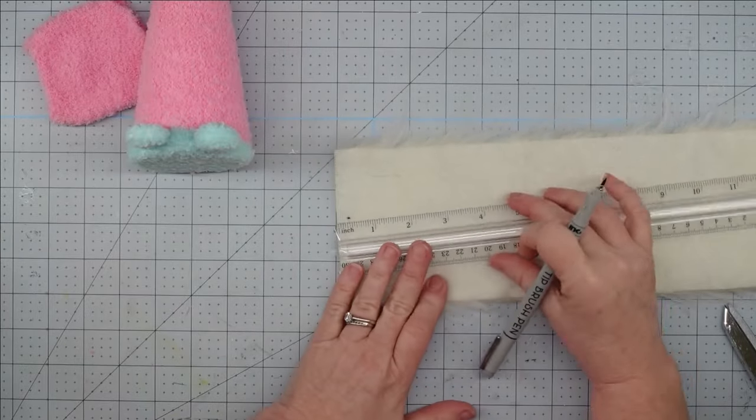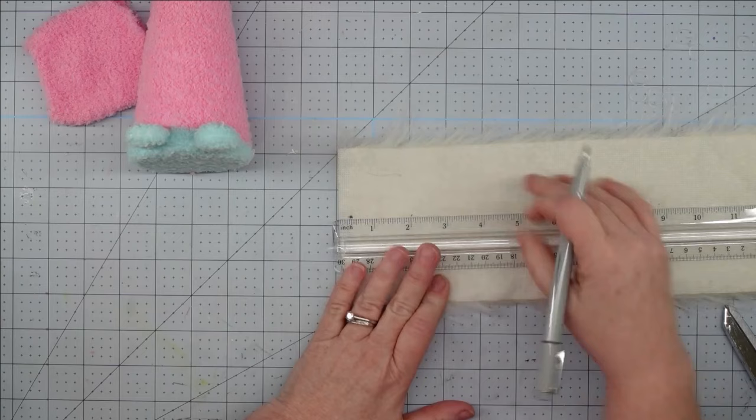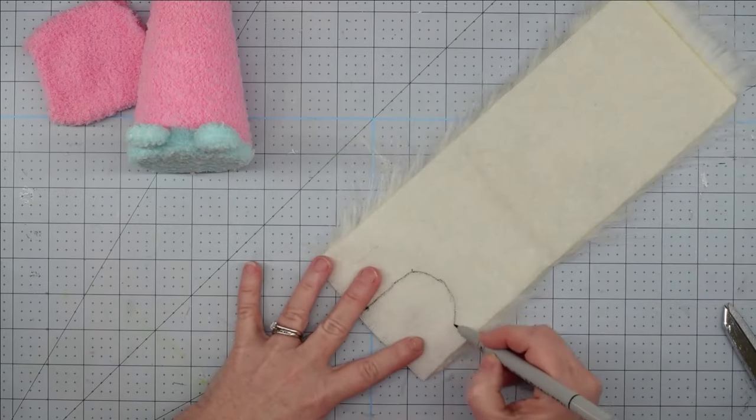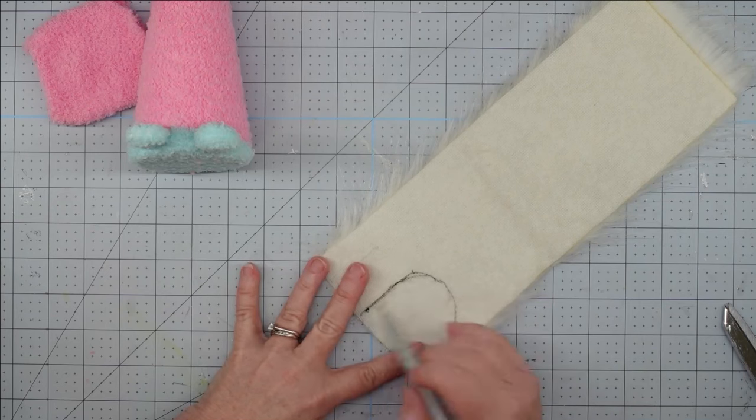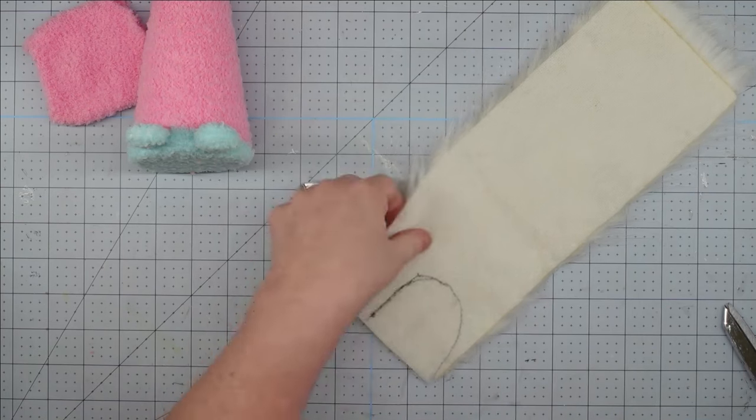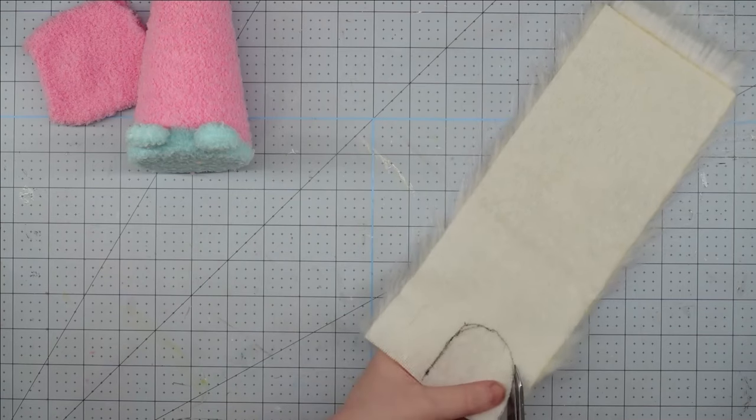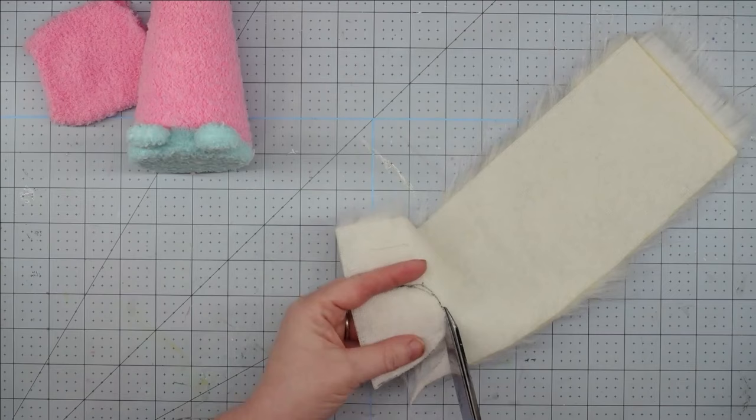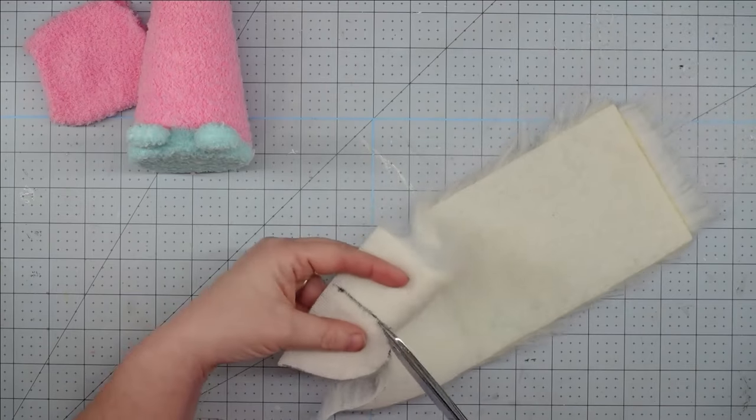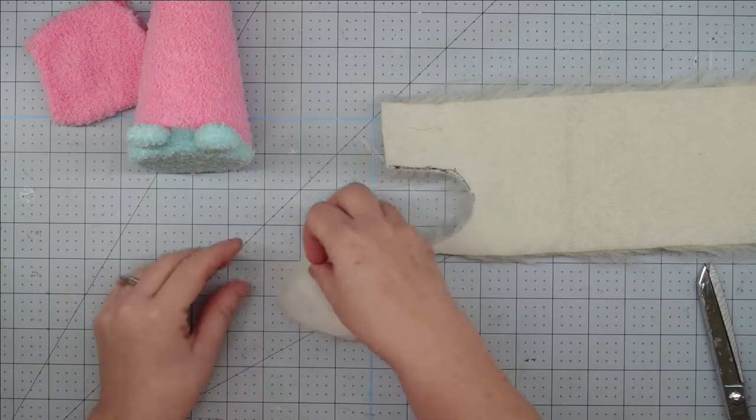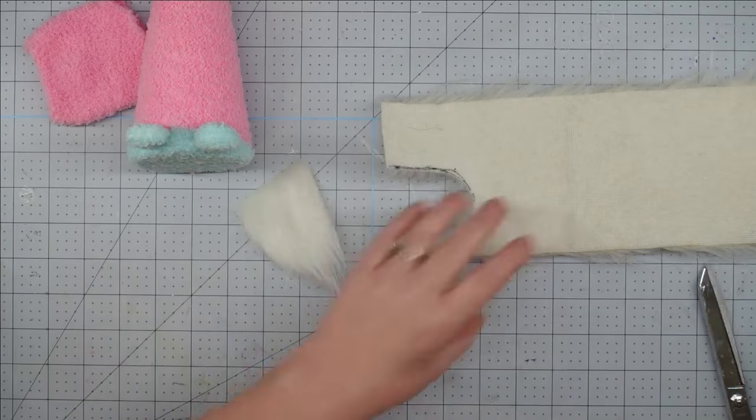Now, to make our beard, we're going to take our faux fur, and we're going to measure over two and a half inches and down two inches, and then we're just going to draw almost like a little U to make our beard shape. Now, take your scissors and cut from the back, making sure that you only cut the backing. Don't cut the fur. This is going to make it look more natural. We'll pull it down, and we have a cute little beard.